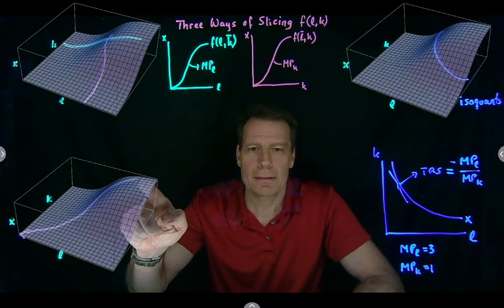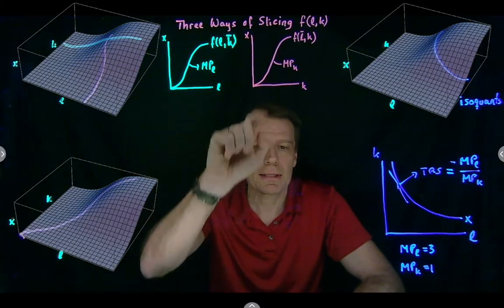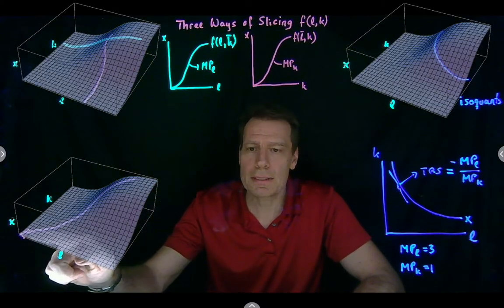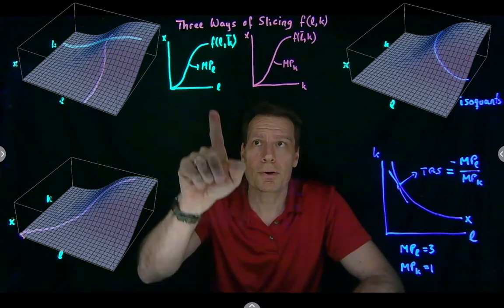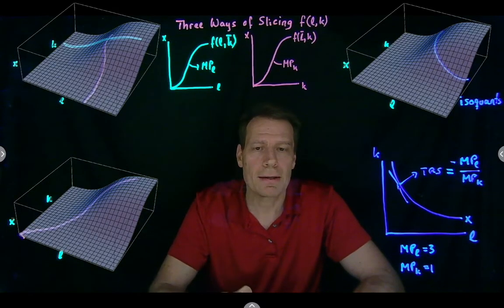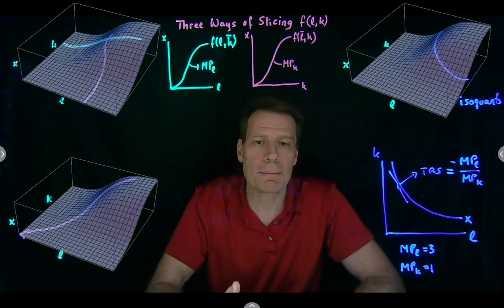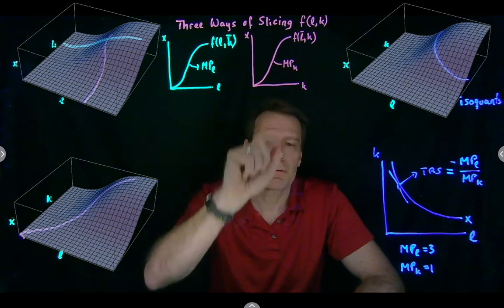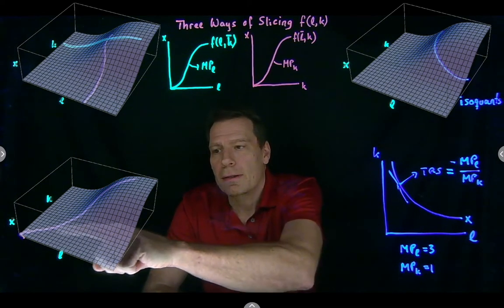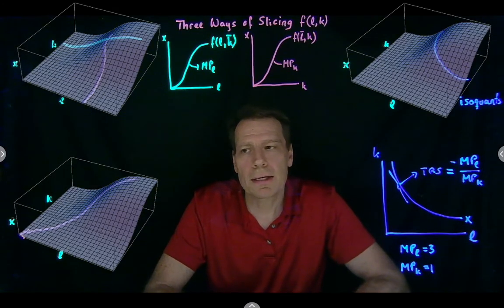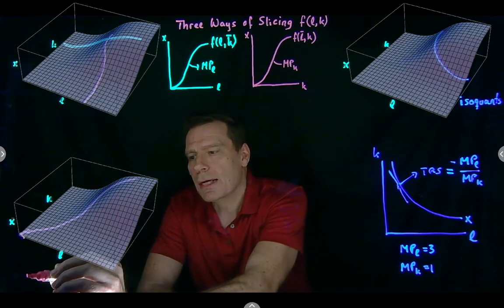This slice doesn't tell us the same thing as these slices, because along this slice, we're varying both capital and labor, and marginal product of labor is defined as the additional output we get from one more unit of labor when we hold capital constant, and similarly for marginal product of capital. So along this ray from the origin, we're really looking at the concept of returns to scale.